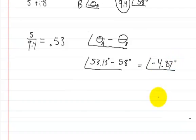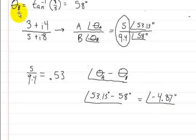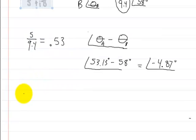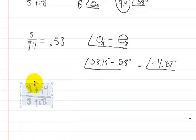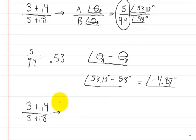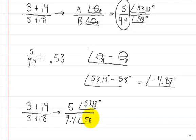Now we're going to finish off by rewriting it. I'm copying this so I don't have to rewrite it all over again. So this quantity, (3 + i4) divided by (5 + i8), is the same thing as 5 with an angle of 53.13 degrees, divided by 9.4 with an angle of 58 degrees.